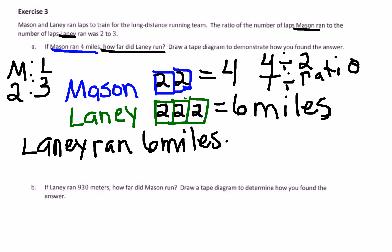Lani ran 6 miles. That was pretty easy. Now, to do part B: if Lani ran 930 meters, how far did Mason run? They'd like us to draw a tape diagram to determine how we find the answer again. Note that B and A are lowercase letters, meaning they are all part of Exercise 3. So when we talk about Lani running 930 meters, we're using the same ratio, because this is the scenario that part B is for.